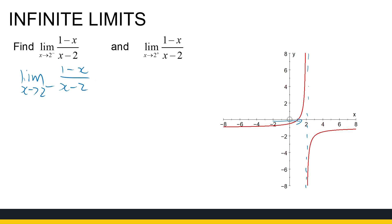We look at the fraction. As x approaches two from the negative side — so values like 1.9, 1.99, 1.9999 — the numerator (1 minus something just below 2) is definitely going to be a negative number. The denominator approaches zero, and dividing by a number very close to zero gives a very large number. Since x approaches two from the negative side, the denominator is also negative. So a negative divided by a negative close to zero gives positive infinity.